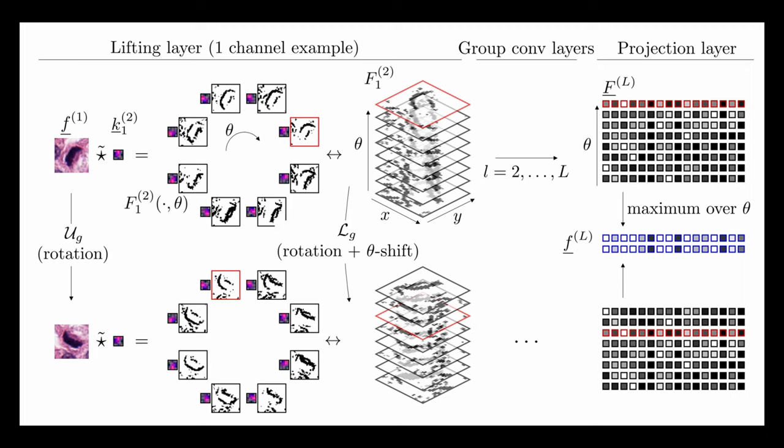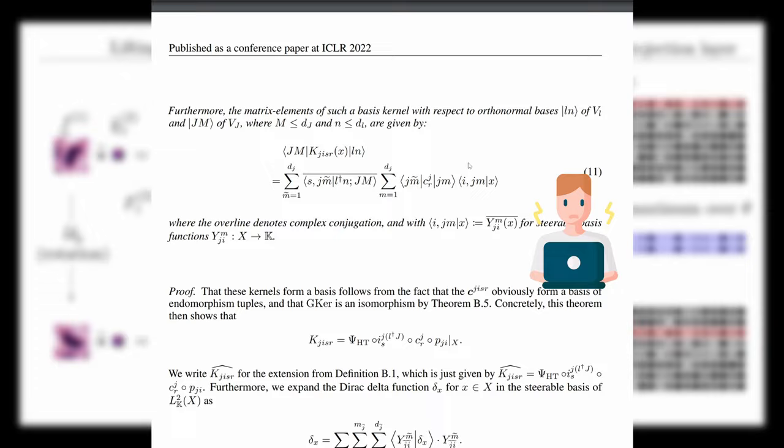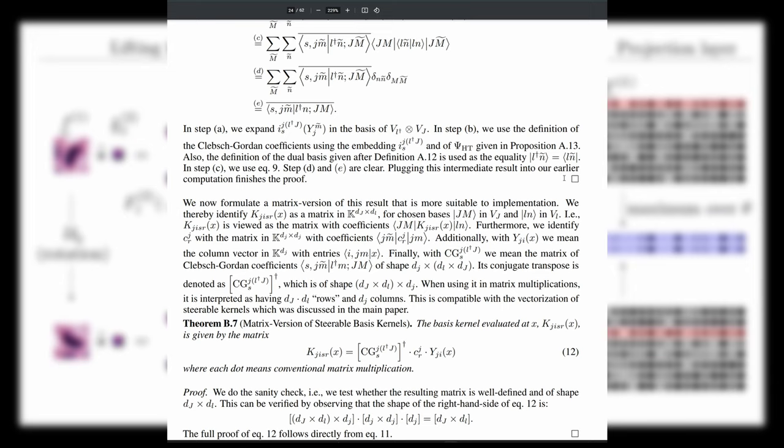This brings us to a further generalization called steerable CNNs published by Cohen and Welling. They present a theoretical framework that enables the implementation of group convolutions without having to discretize groups. As a warning, when you dive into this area and have only few knowledge in mathematical representation and group theory, you will probably not understand a lot in the beginning. That was at least my experience.